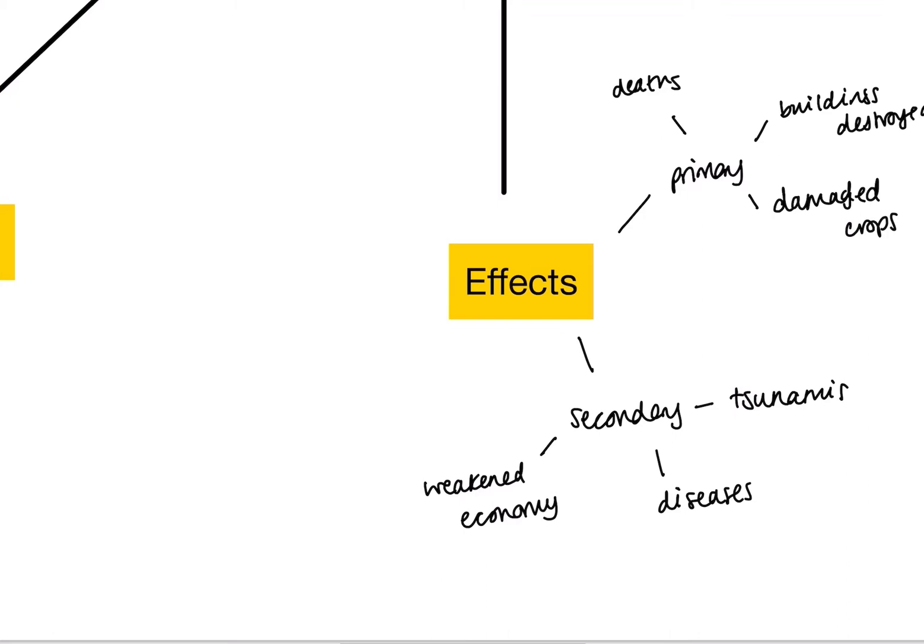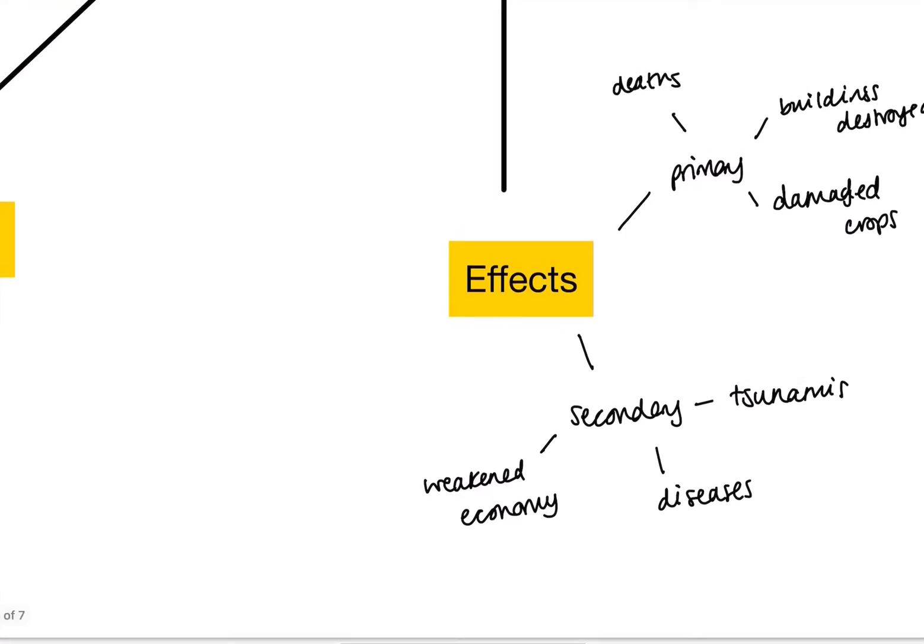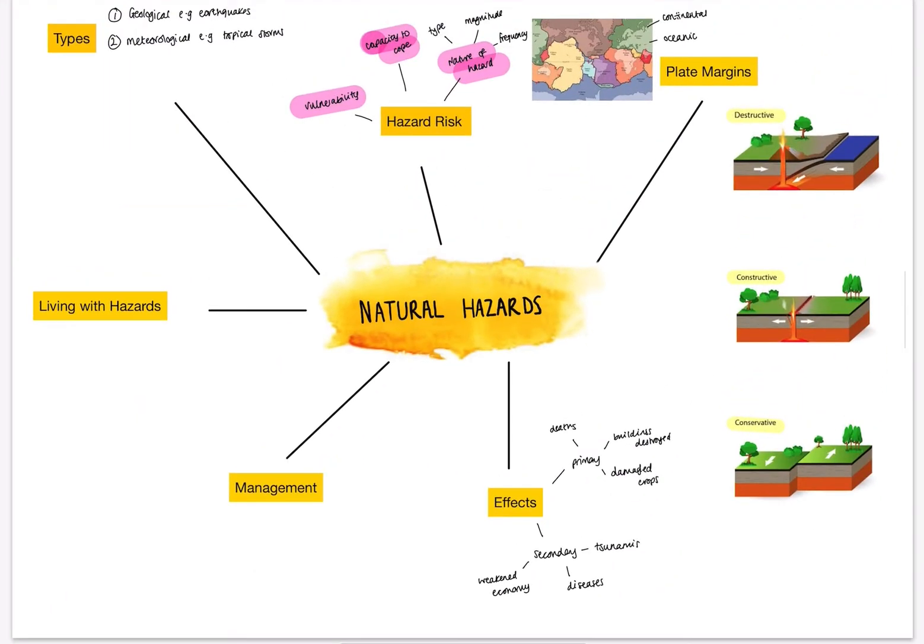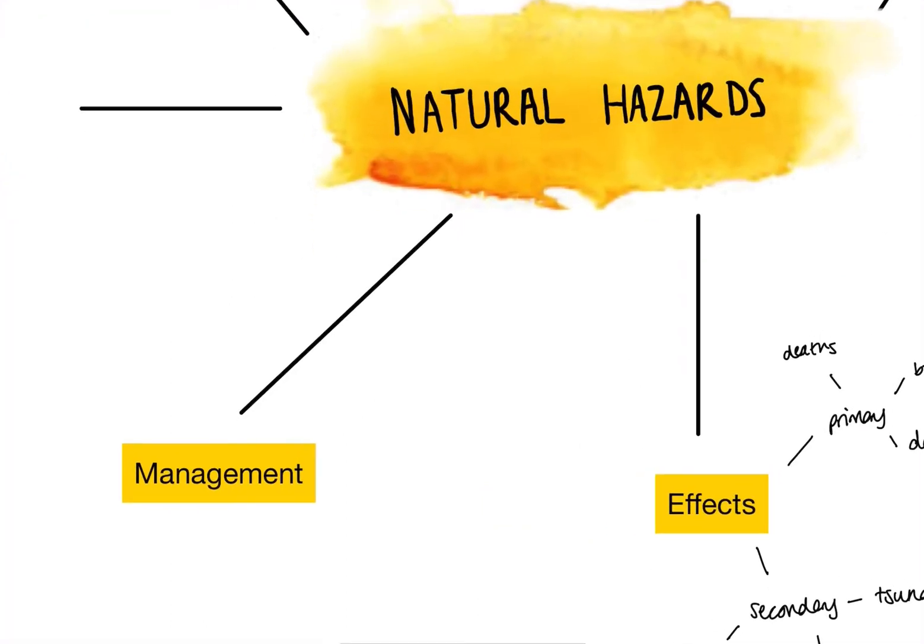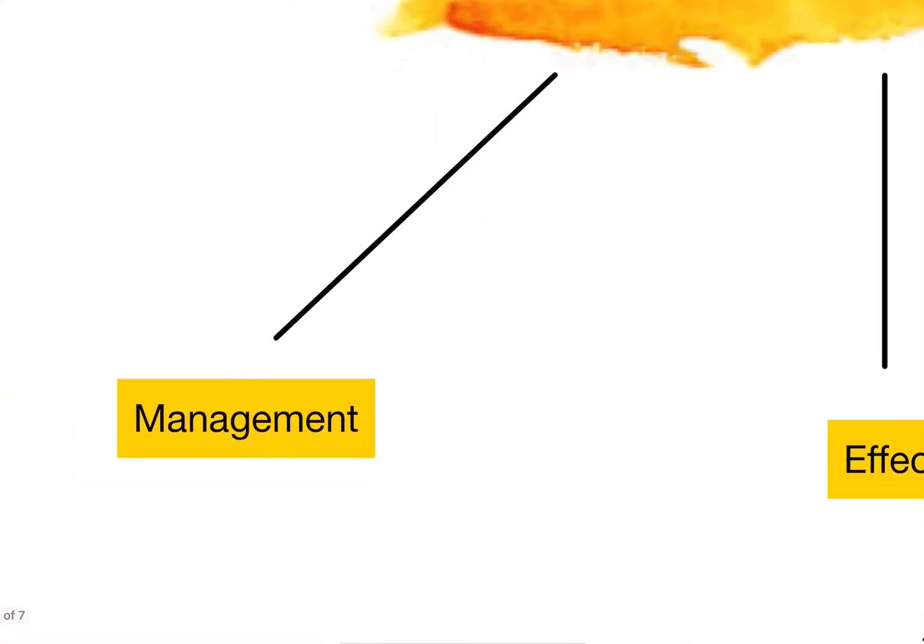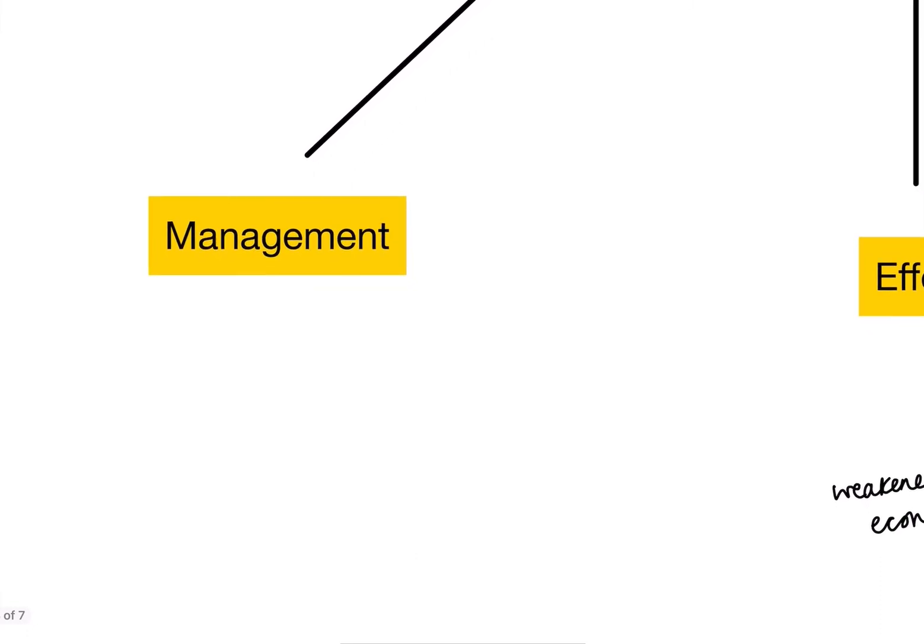If we zoom out and look at the bigger picture, so far we've covered really two-thirds of the hazards. We've thought about our types of hazards, we've thought about hazard risk, our plate margins and our effects. As with all effects, we need to think about how we would manage these going forward. Like with our effects, we said we'd call these primary or secondary. You can categorize your management into two groups.